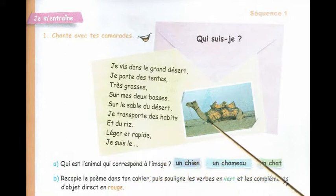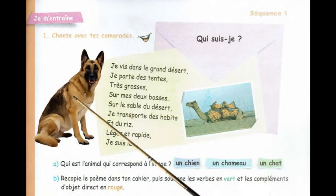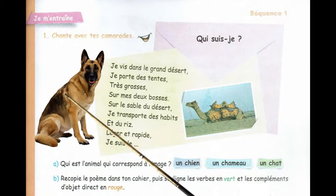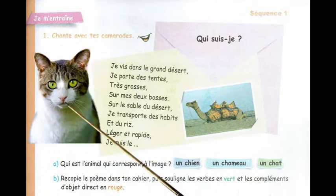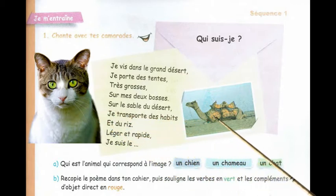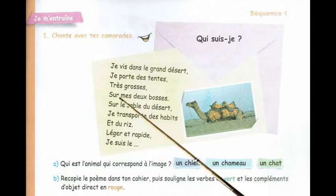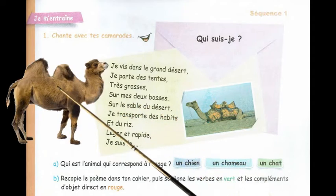Je regarde l'image. Cet animal est un chien ? Non, cet animal n'est pas un chien. Cet animal est un chat ? Non, cet animal n'est pas un chat. Cet animal est un chameau ? Oui, cet animal est un chameau.